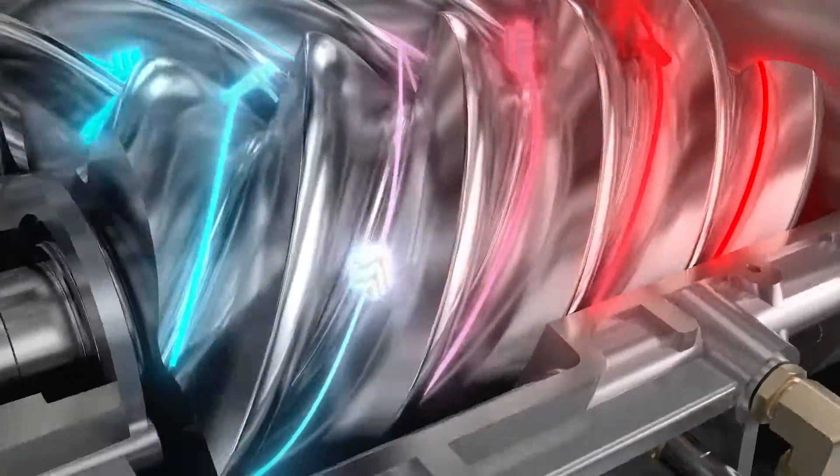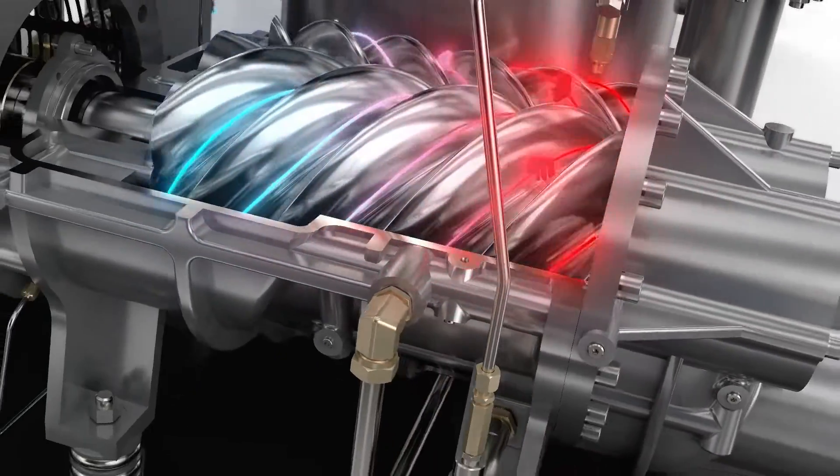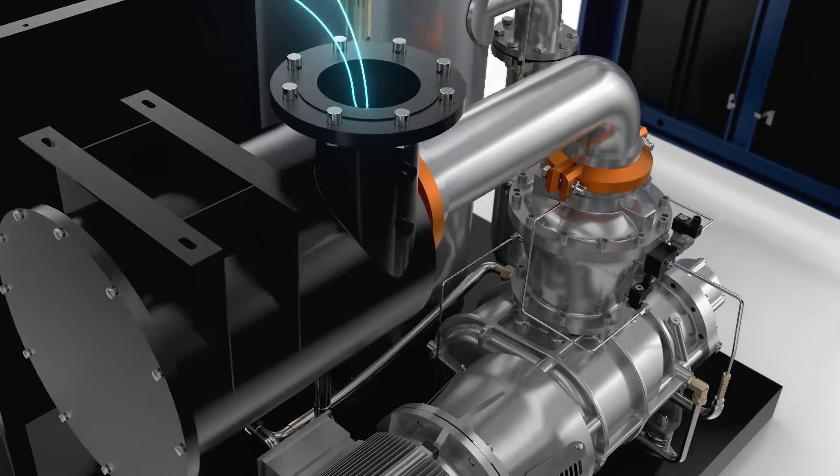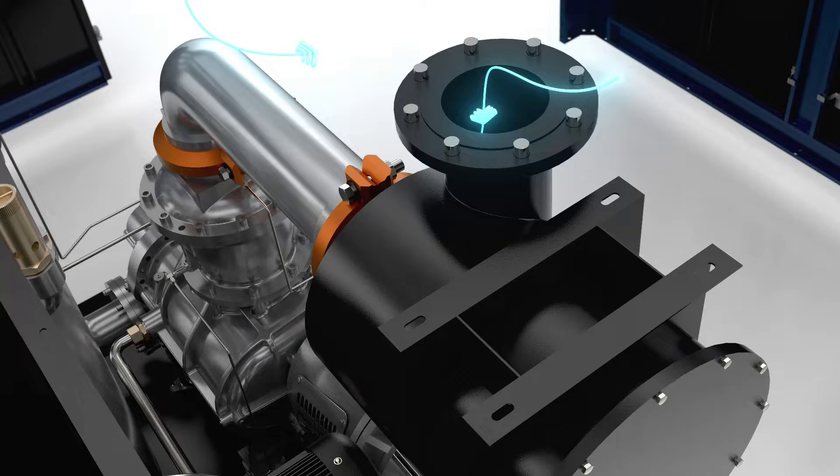Rotary screw vacuum pumps are similar to rotary screw compressors where a pair of screws rotate continuously to compress the air, just that the rotary screw inlet is pulling from a fixed chamber rather than a discharge.